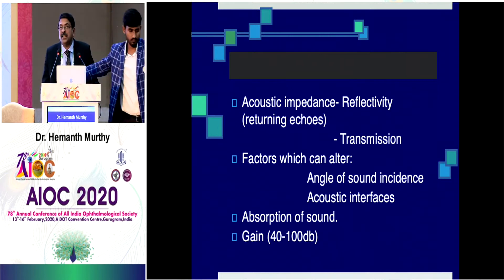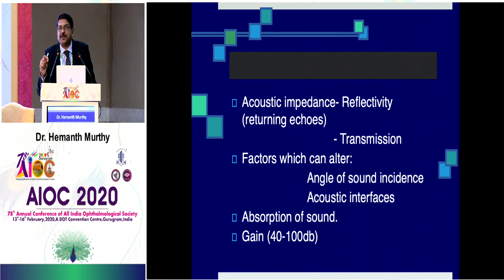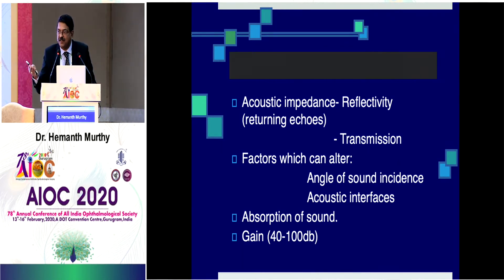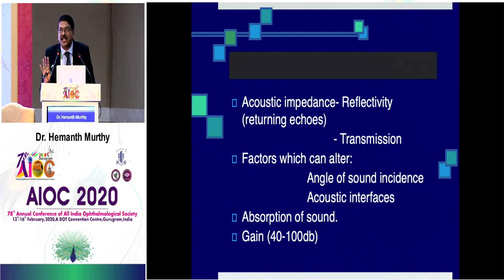Acoustic impedance is the obstruction the sound faces as it passes from one medium to another — from a less dense medium to a denser medium. Whenever there is an obstruction, it results in two things: reflection, which is the returning echoes called reflectivity, and transmission of sound. The entire picture of ultrasound is described by these two features.